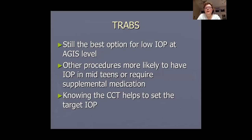When you want really low pressure, trabeculectomy is still the best option. Newer procedures in Europe, Canada, and the US are more suited for early to moderate patients. Many patients still present with advanced disease and need pressures under 14. Trabeculectomy is a good option even with its pros and cons, including for low-tension glaucoma — if a patient progresses at a pressure of 14 while on medications, you won't get them to 10 with anything else. Central corneal thickness helps set the target IOP.